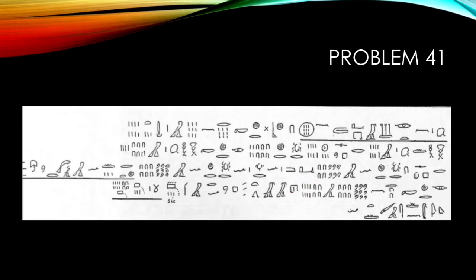Add half of it to the total. It makes 960. It gives you 48, meaning there are 48 hundred quadruple hekat in the cylinder.